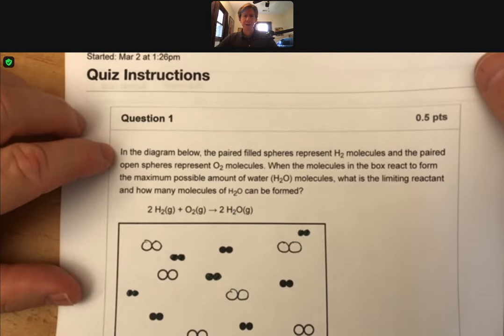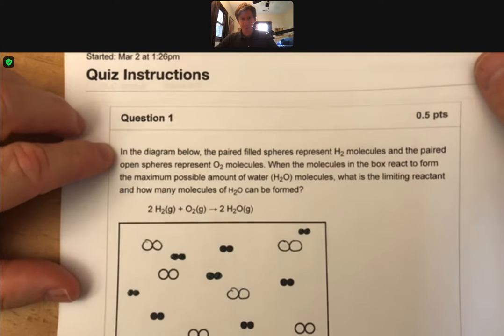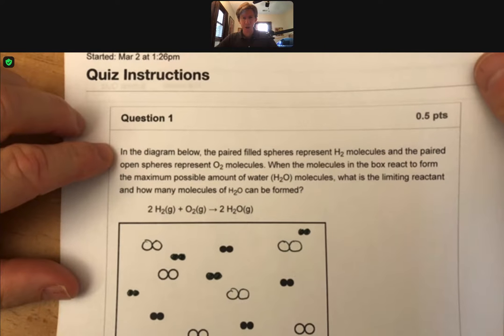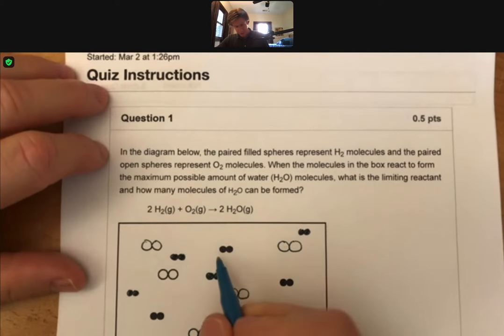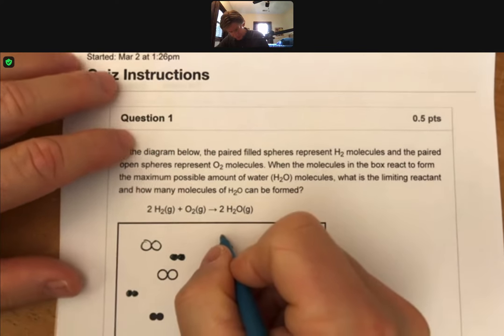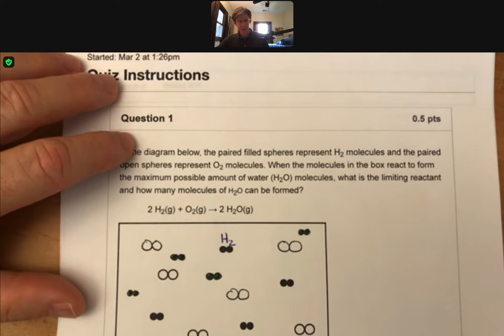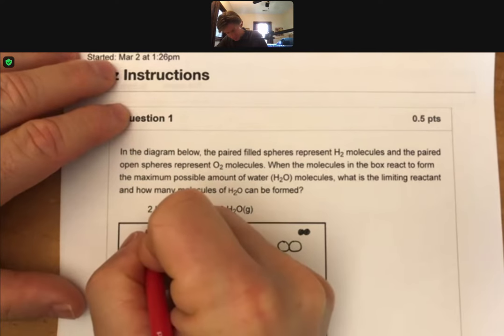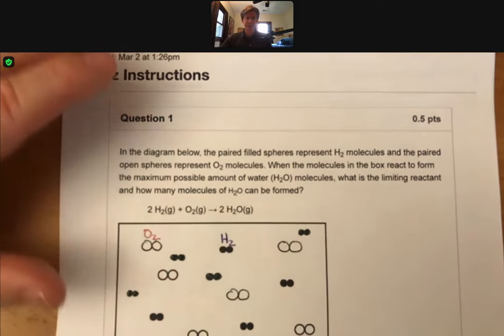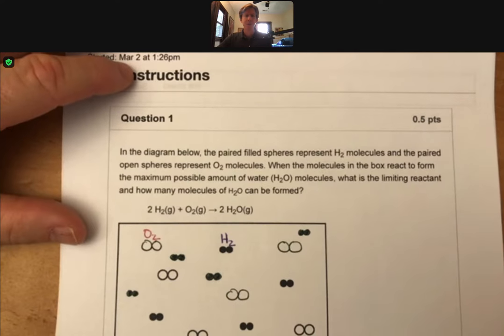In the diagram below, the paired filled spheres represent H2 molecules and the paired open spheres represent O2 molecules. When the molecules in the box react to form the maximum possible amount of water H2O molecules, what is the limiting reactant and how many molecules of H2O can be formed?